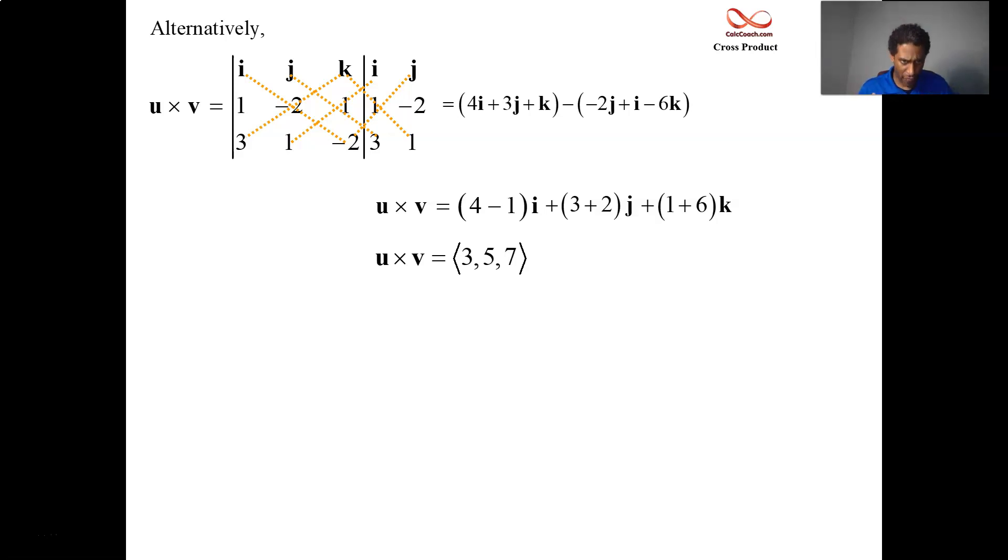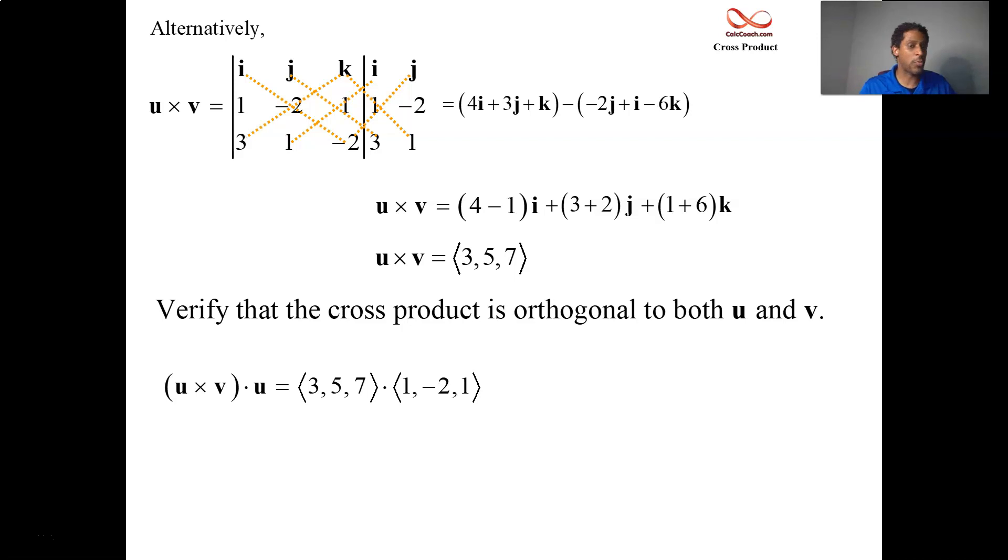Now, let's just verify that this vector that we get out is orthogonal to both the other vectors. How do you check to see whether a vector is orthogonal to another vector? The dot product. The dot product should be equal to 0 when two vectors are orthogonal. And so our vector 3, 5, 7, which is the cross product, we dot it with the u vector: 1, negative 2, 1. 3, negative 10, and 7. It ends up as 0. Great. At the same time, though, we need to dot it with the other vector, which was v: 3, 1, negative 2. We get a 9, a 5, and a negative 14, also 0.